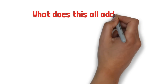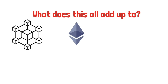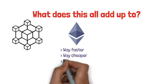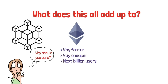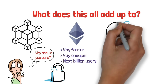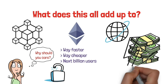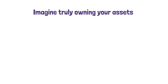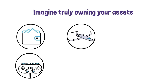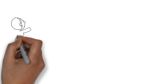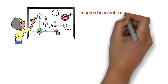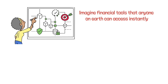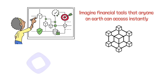So what does this all add up to? A blockchain that's just like Ethereum, but way faster, way cheaper, and ready for the next billion users. No compromises. This kind of speed and scale unlocks things that just aren't possible today. Imagine sending money globally in a second for a fraction of a penny with low fees and no middlemen. Imagine truly owning your assets — bank accounts, game items, airline miles, subscriptions — all directly controlled by you, not a corporation. Imagine no lock-in, seamless app switching, and financial tools that anyone on earth can access instantly and permissionlessly.